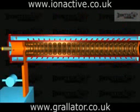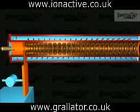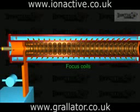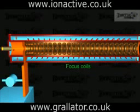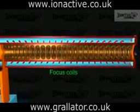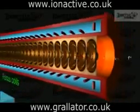For both accelerator types, the electrons are subject to forces during acceleration that tend to cause divergence of the beam. To control this, focus coils run along the length of the accelerator waveguide, preventing divergence and bringing the beam to the desired size at a point beyond the exit of the accelerator waveguide.